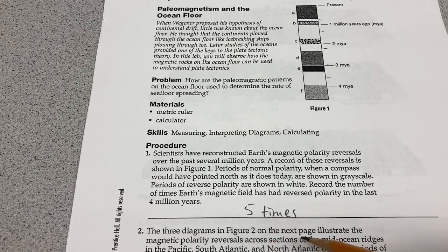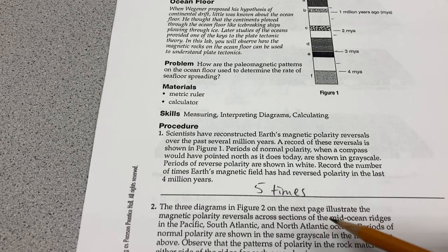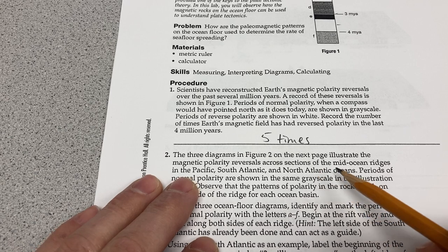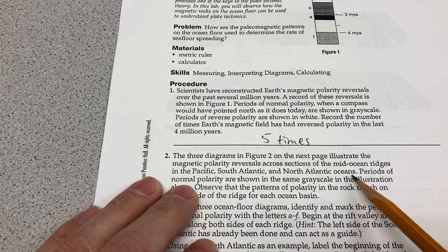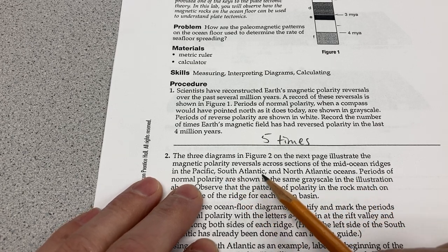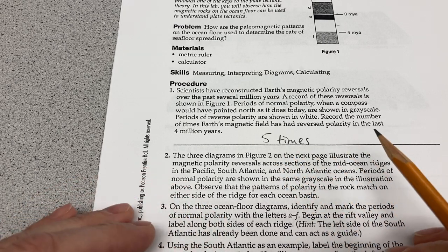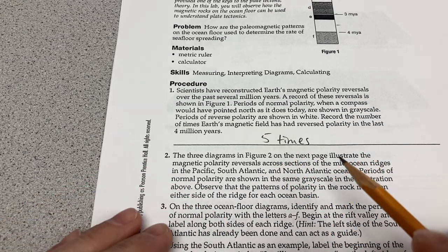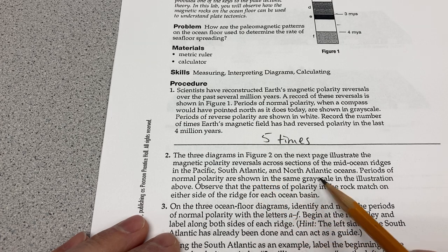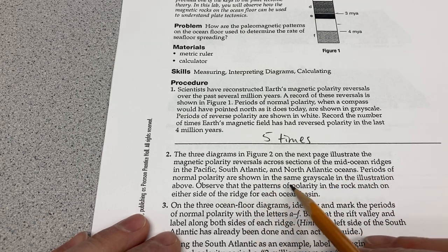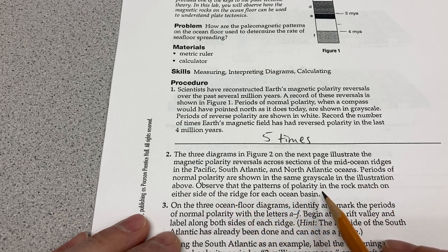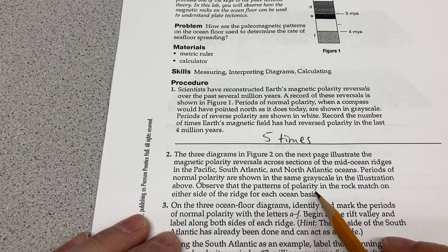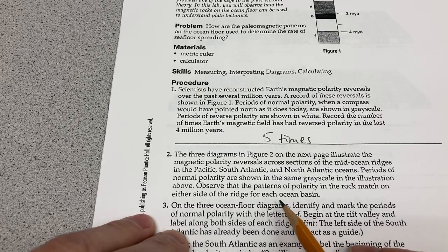The three diagrams in figure two on the next page illustrate magnetic polarity reversals across sections of the mid-oceanic ridges in the Pacific, South Atlantic, and North Atlantic oceans. Wherever there's one of these ridges and new ocean floor is being formed and spreading, we'll see these polarity reversals. We've got three different ocean basins. Periods of normal polarity are shown in the same grayscale. Observe that the patterns of polarity in the rock match on either side of the ridge for each ocean basin.